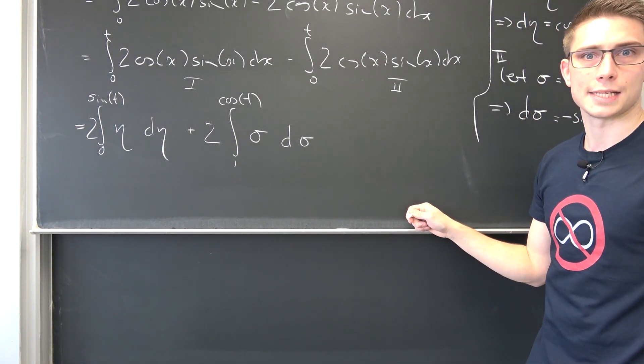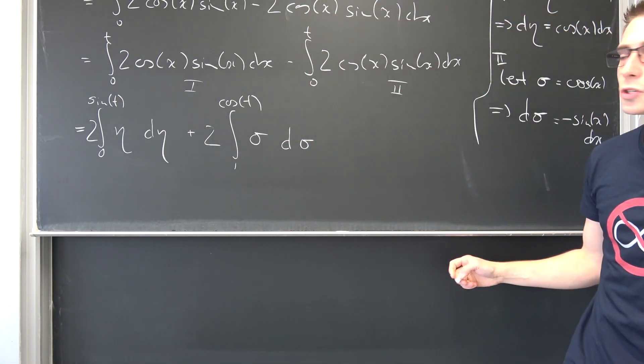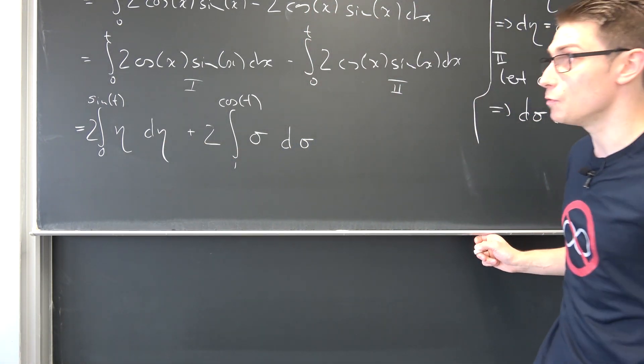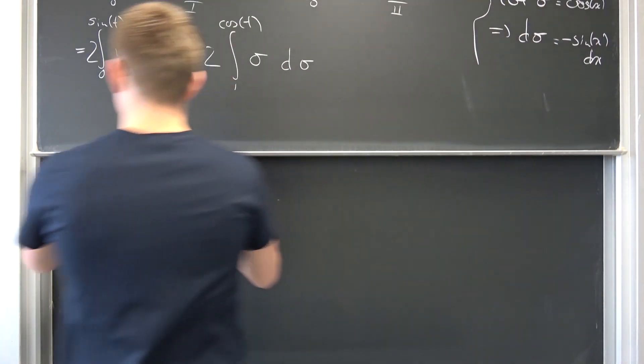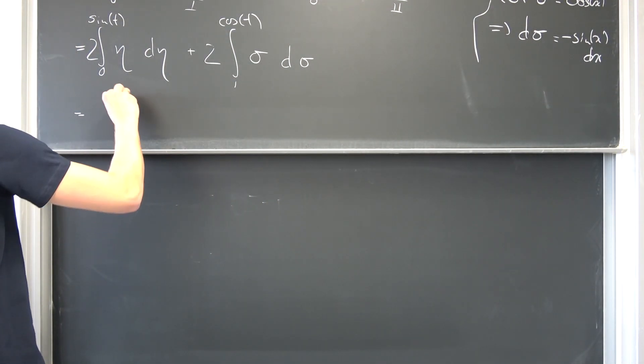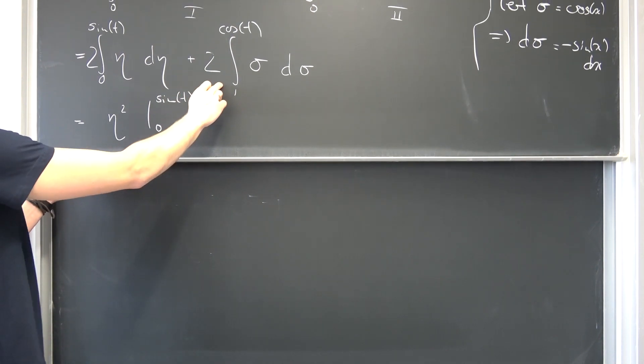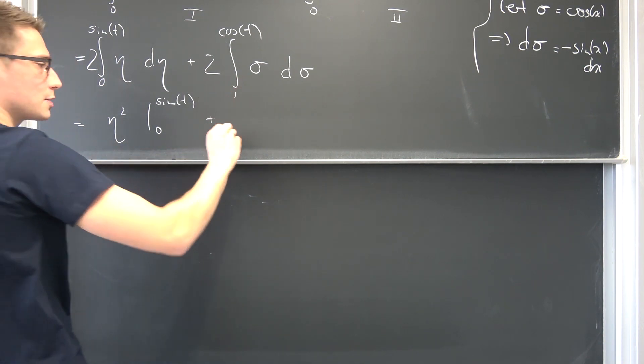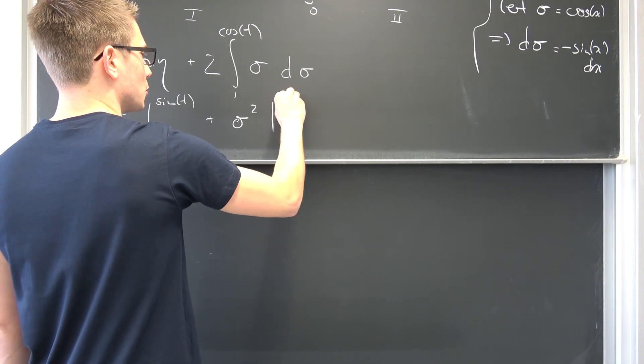Now we have polynomials yet again. We have simple polynomials that we need to integrate. If we integrate eta, we are going to end up with eta squared over 2. But 2 times 1 half is going to be 1. So, we are going to be left with just eta squared from 0 to the sine of t. Same spiel here. We are going to get plus 2 and 1 half is going to cancel out. Sigma squared from 1 to the cosine of t.